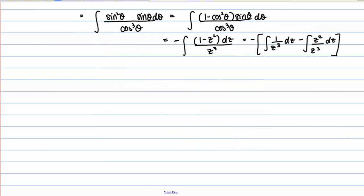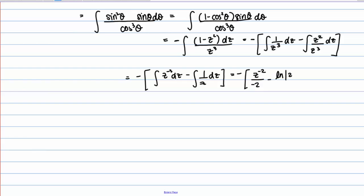The first integral can be written as z to the negative 3 power dz, and the second is the integral of 1 over z dz. Keeping the negative out front, this becomes z to the negative 2 over negative 2, minus the natural log of the absolute value of z, plus C. Distributing the negative gives us 1 over 2z squared plus the natural log of the absolute value of z, plus C.